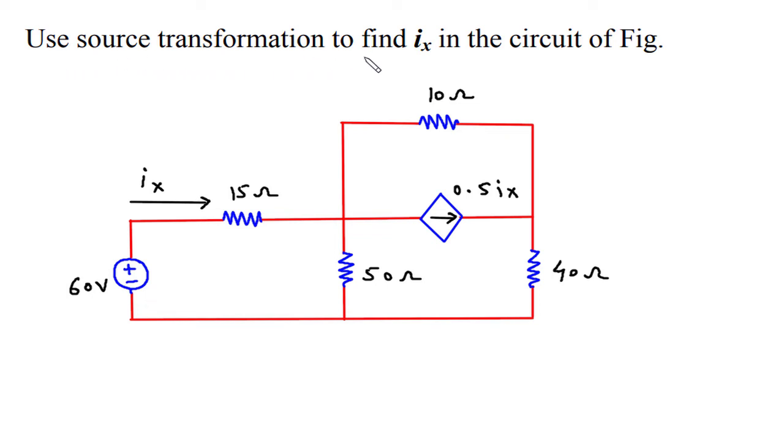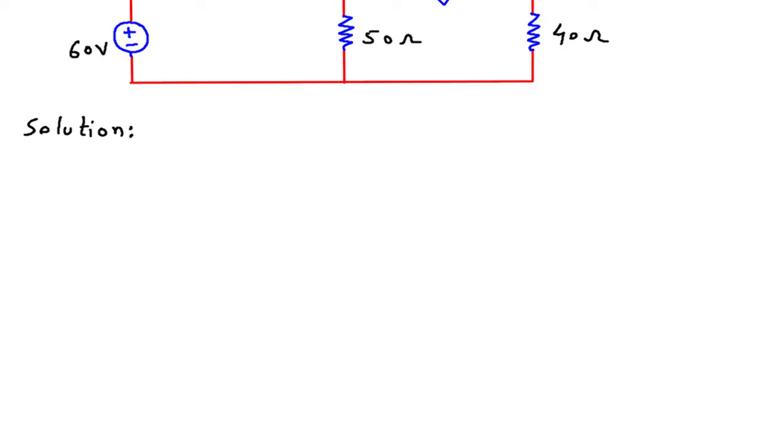We use source transformation to find Ix in the circuit of figure. We have to find this Ix in this circuit using source transformation solution. First of all we will redraw the circuit.